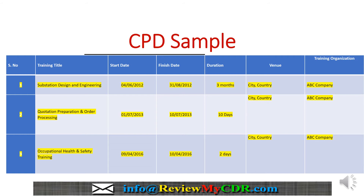In each column, the name of the activity — such as training, workshop, courses, or books — should be clearly stated. Starting and finishing dates should be clearly elaborated, and the duration should be mentioned. The venue where the activity took place should also be written, along with the name of the organization that carried out the activity.